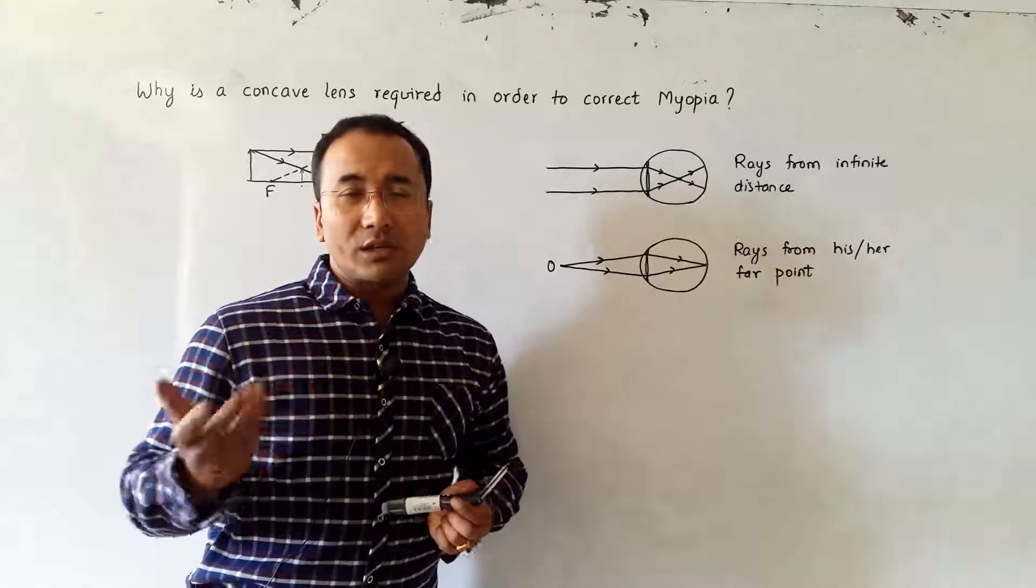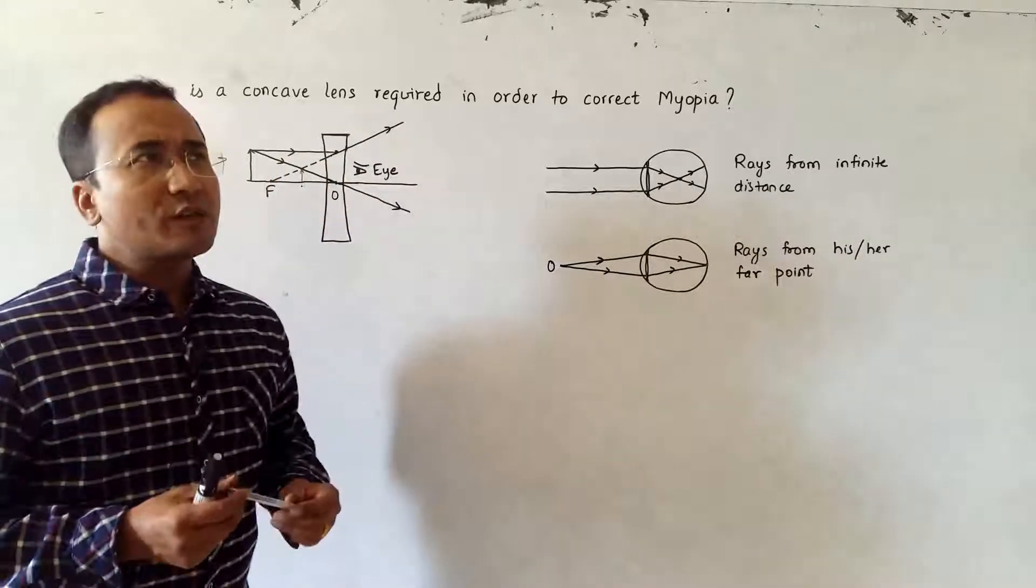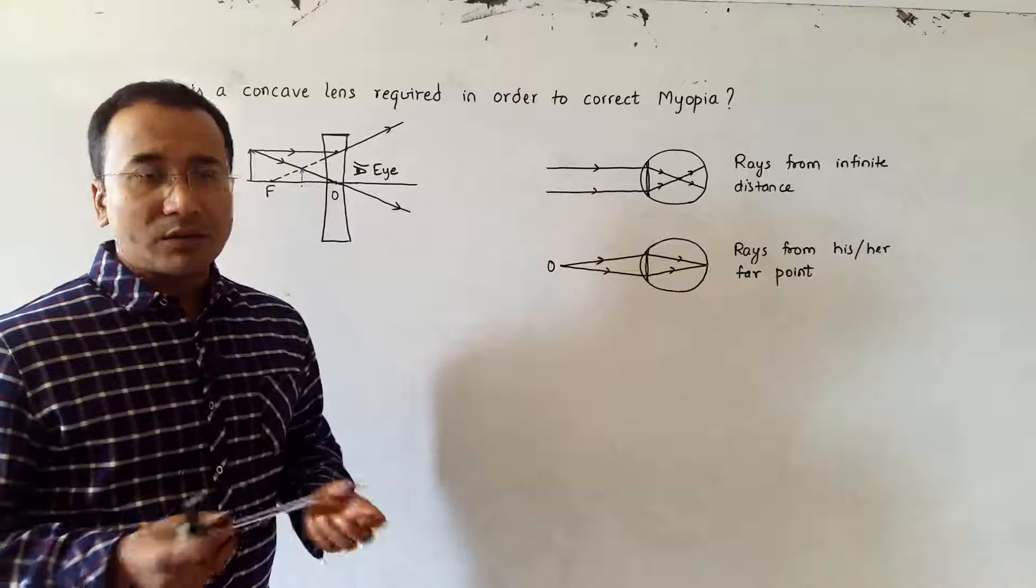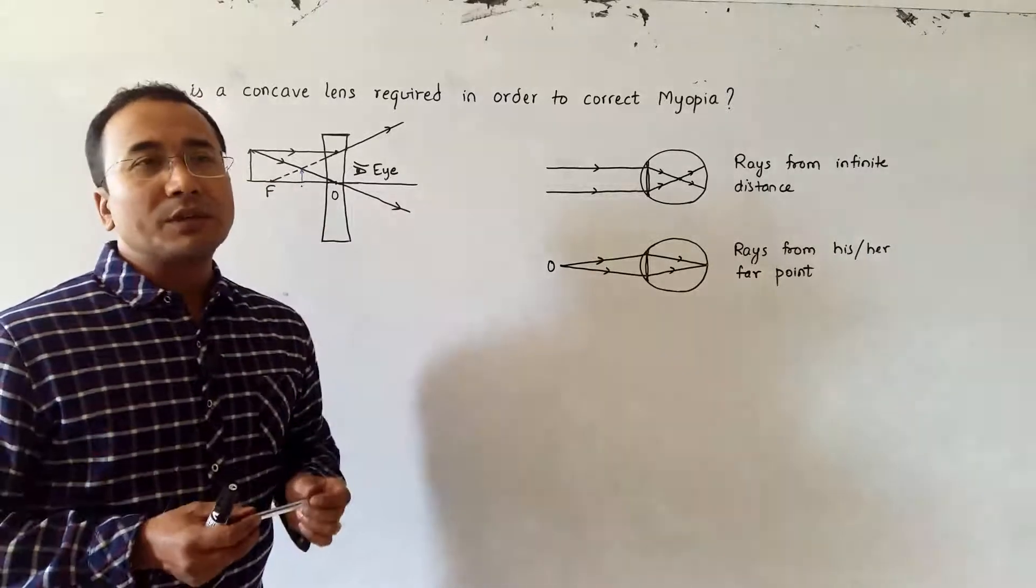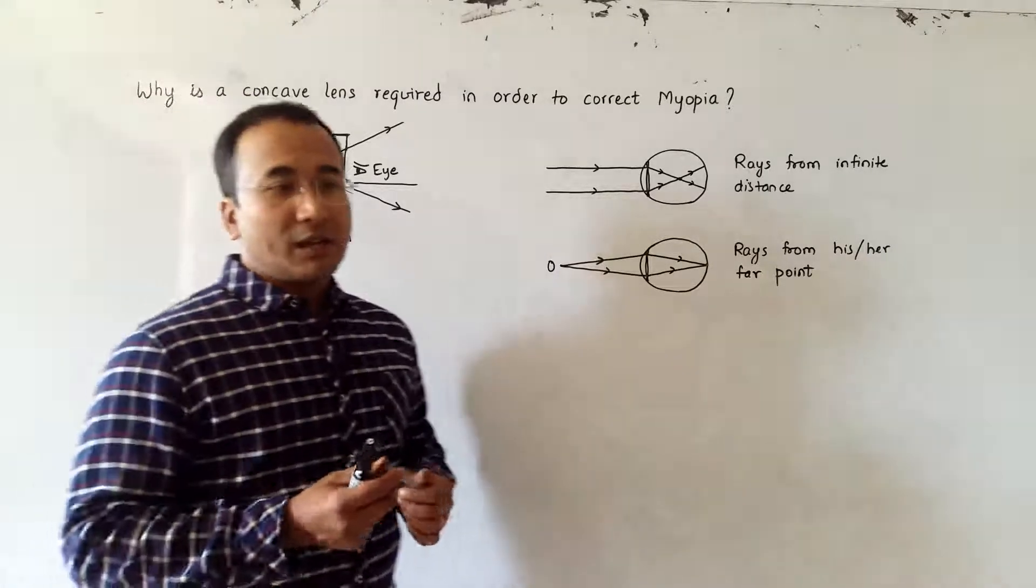It is not feasible that we carry a binocular over the eyes, but it is feasible that we carry a concave lens.